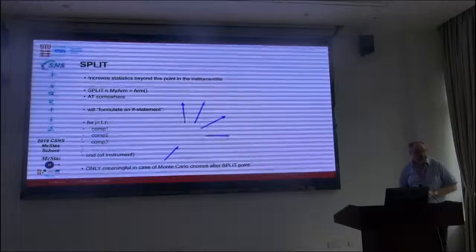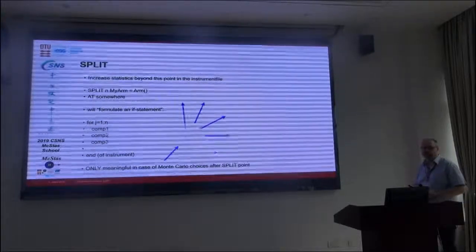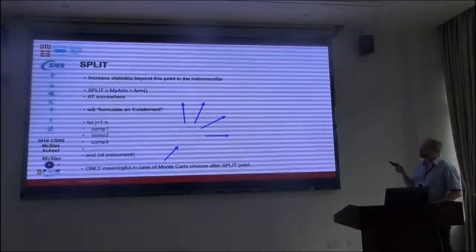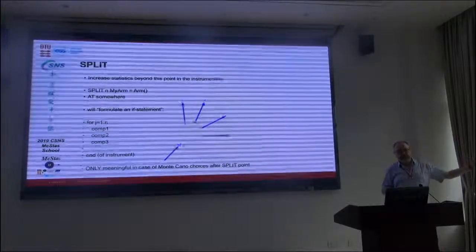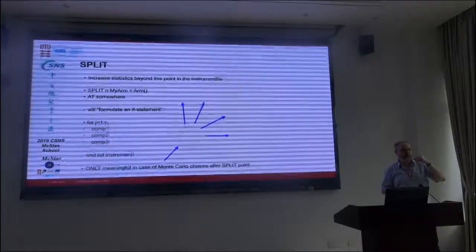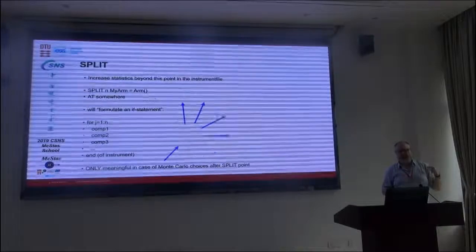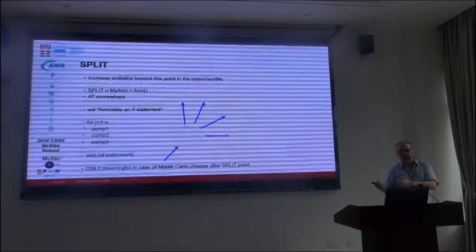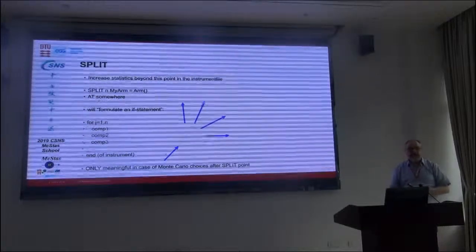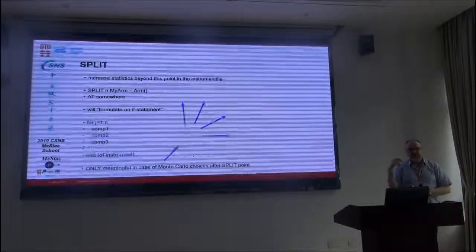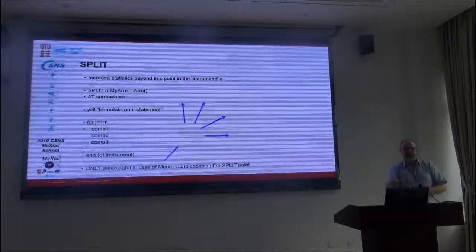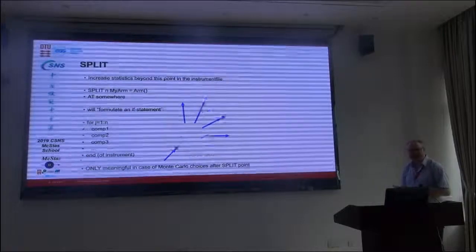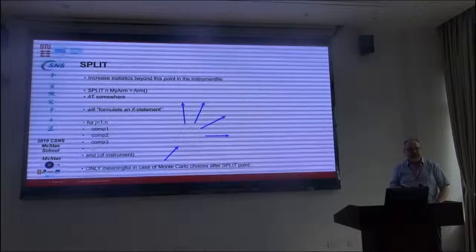The first piece I'll discuss is the split, and this should be used with a bit of caution. It's intended to increase statistics. So if you have a costly simulation of your primary spectrometer and you arrive at your sample, maybe you could reuse the information in one neutron for multiple processes - because in the samples, we can both scatter, be transmitted, and be absorbed, and so forth. In a sample with a lot of different reflections, it's possible that one neutron event would have a possibility of scattering on multiple lines. So it's a kind of variance reduction technique.